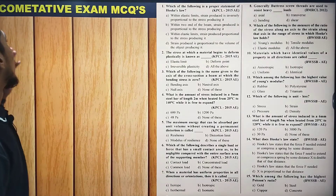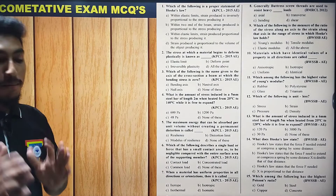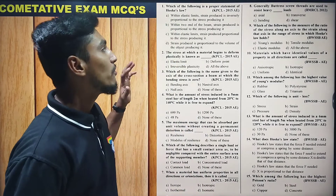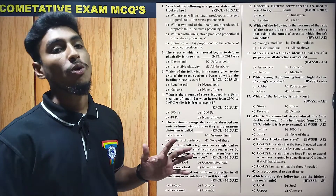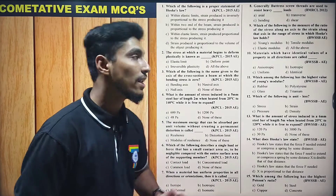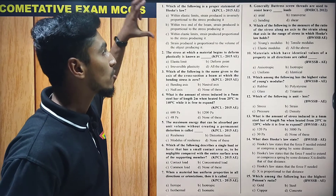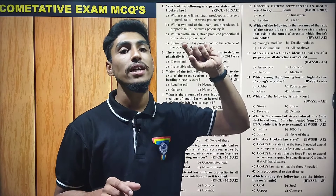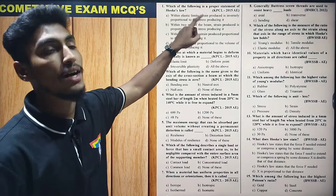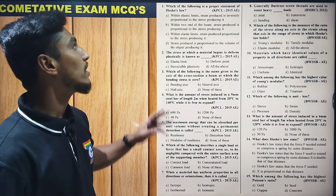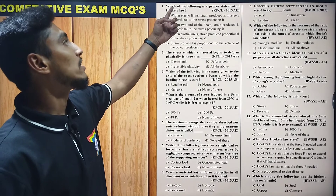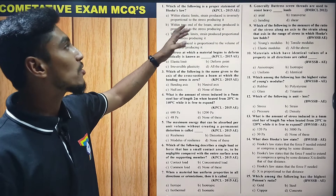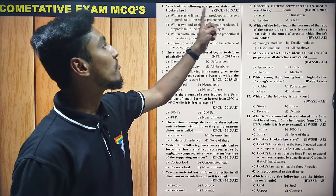Next are Competitive Exam MCQs — this is very important. In this particular paper, competitive exam MCQ questions from previous years are included. For example, in the note book: 'Which of the following is a proper statement of Hooke's Law?' — from the KTCL exam in 2015. We have included these particular questions.